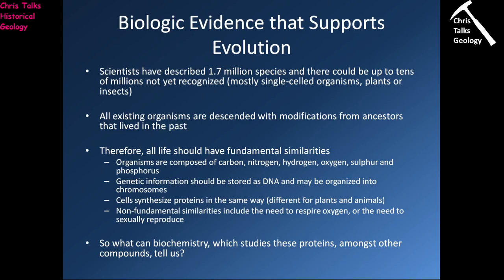Then there is the genetic information and the way it's stored. Life on Earth stores its genetic information in the form of DNA, which is shared by all life on Earth. Now there are going to be variations in how that DNA is stored — some cells will simply allow the DNA to be loose inside the cell, while some cells will have the DNA organised into bundles which we term chromosomes. So the way we're storing our genetic information is the same, but there will be differences in the way that DNA is contained within cells.